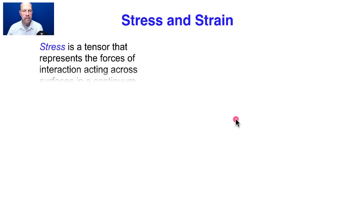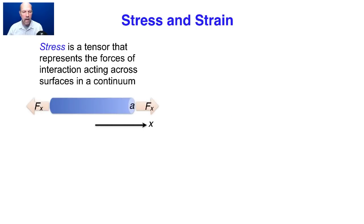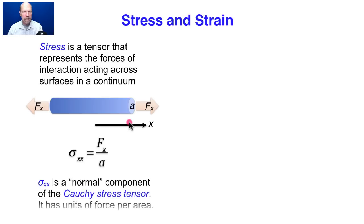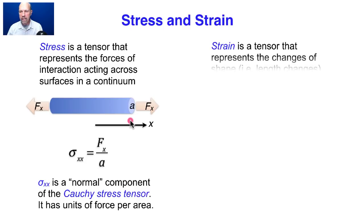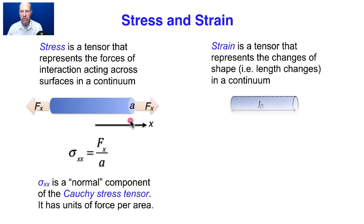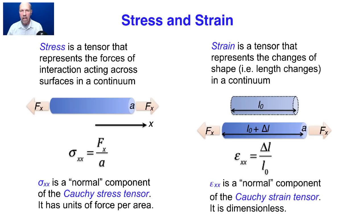Recall that stress is a tensor that represents the forces of interaction acting across surfaces in a continuum. For a uniaxial specimen of cross-sectional area A subjected to tensile forces Fx along the axis of the specimen, the uniaxial stress sigma_xx is Fx divided by A. Sigma_xx is a normal component of the Cauchy stress tensor and has units of force per area. Strain is a tensor representing changes of length in a continuum. If a specimen had an original length L0 and after tensile stress had a new length L0 plus delta L, then the strain epsilon_xx is delta L over L0, a normal component of the Cauchy strain tensor. It is dimensionless.